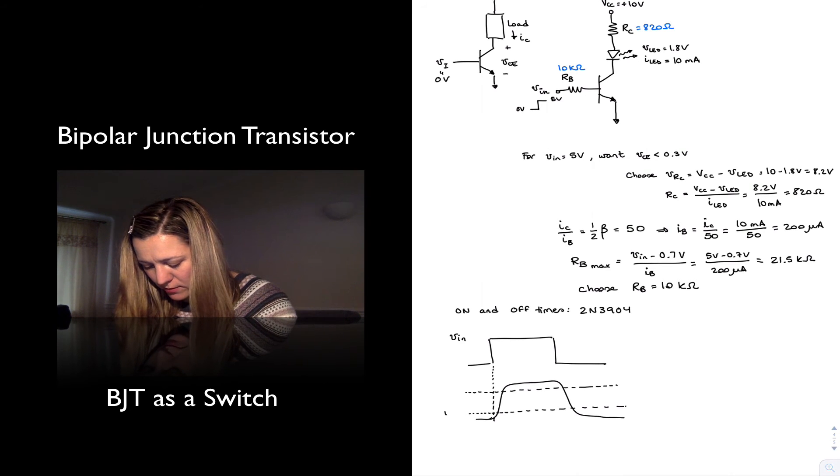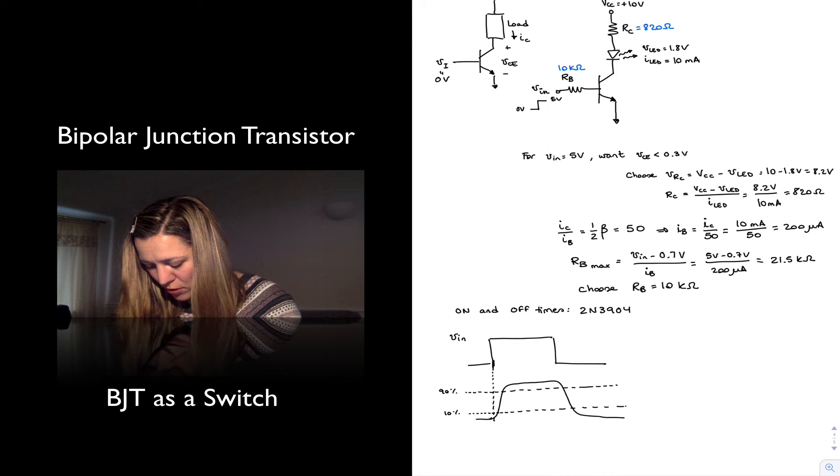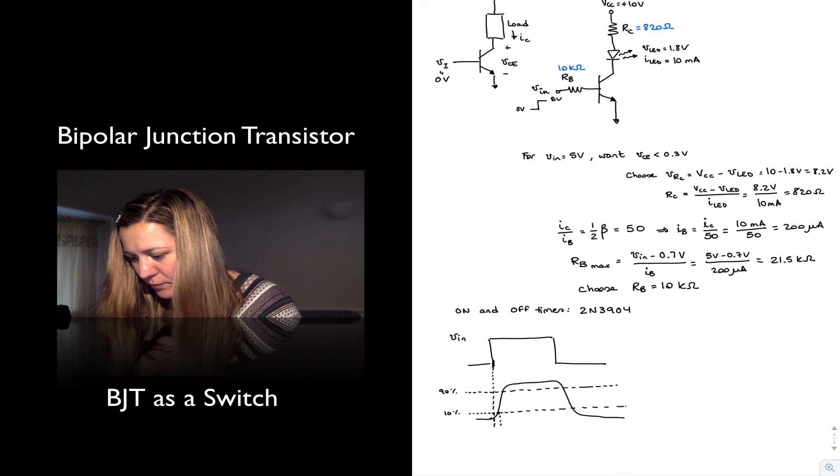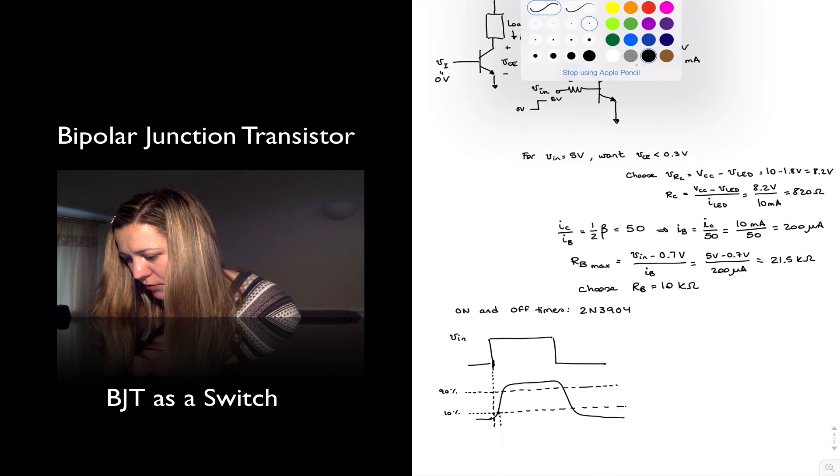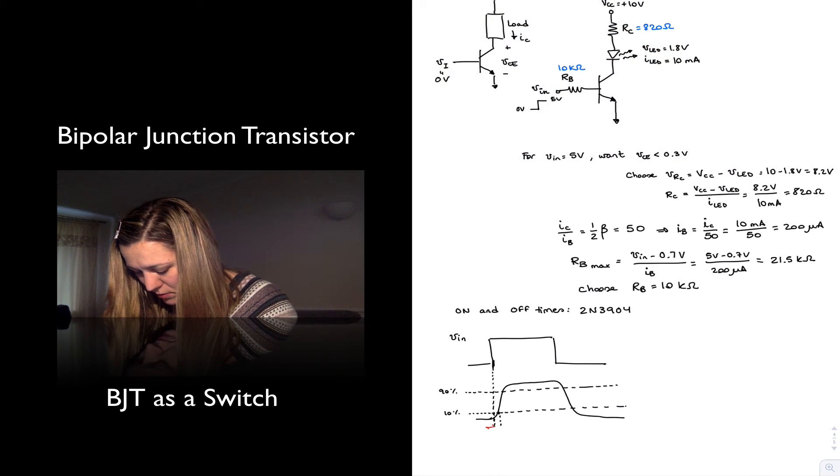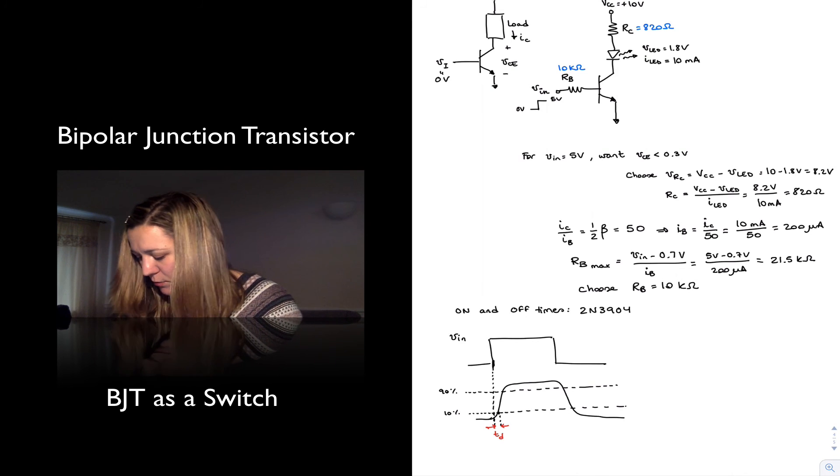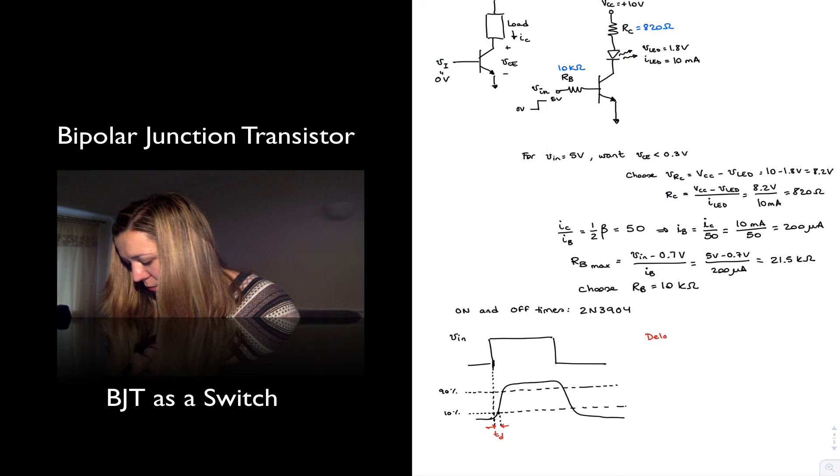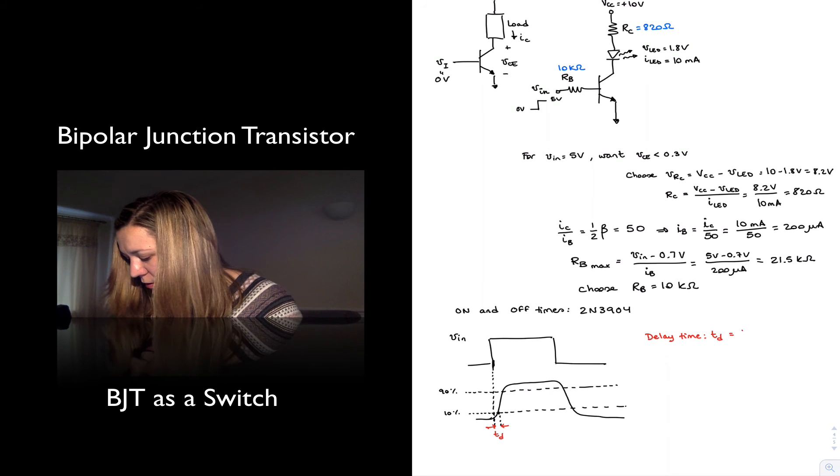All right, this is 10% voltage swing and 90% voltage swing. And so we first have the delay time, as I mentioned, that is from the time I switch on my input to the time my output reaches that 10% level. That's called the delay time. If we look at my datasheet, delay time TD is 35 nanoseconds.